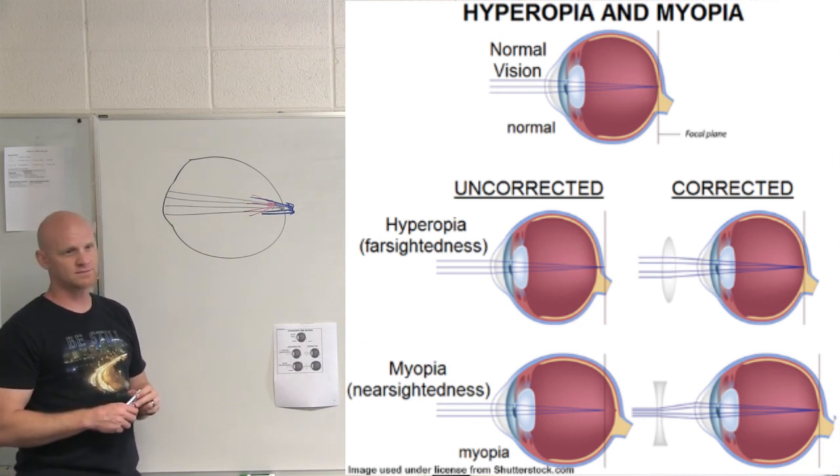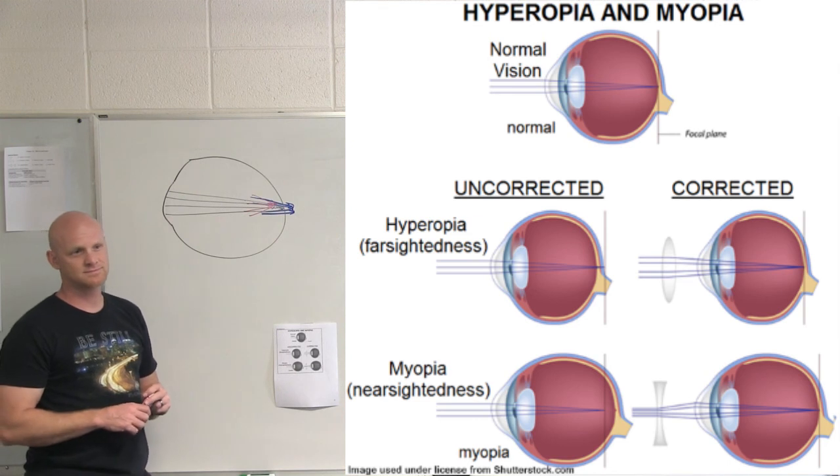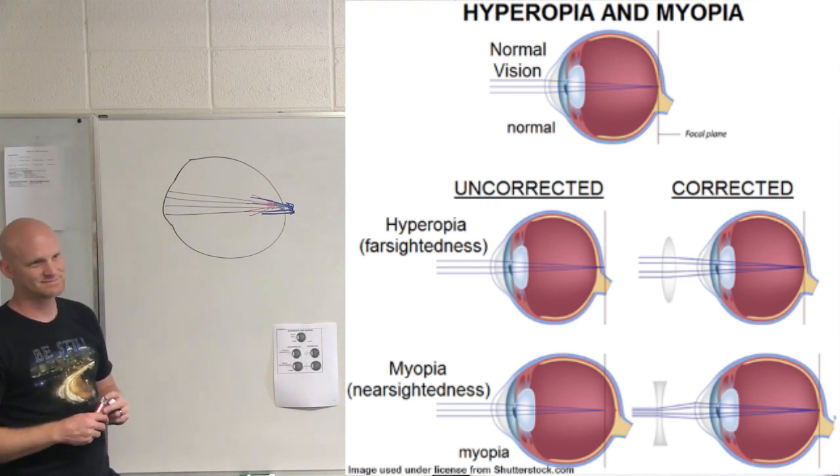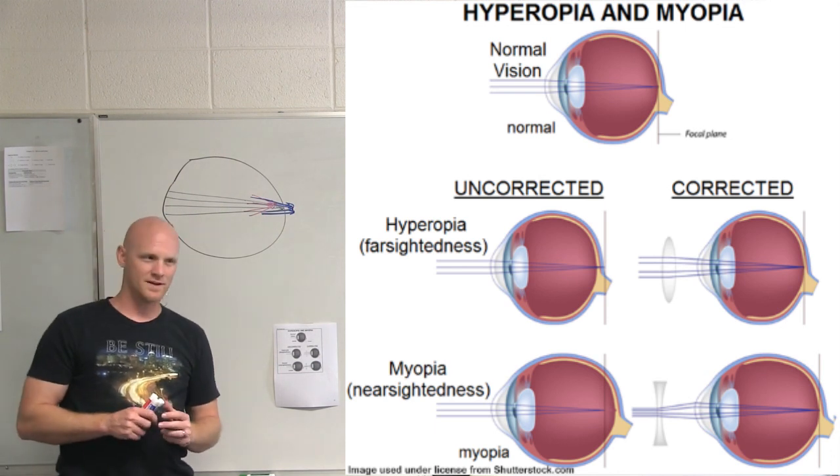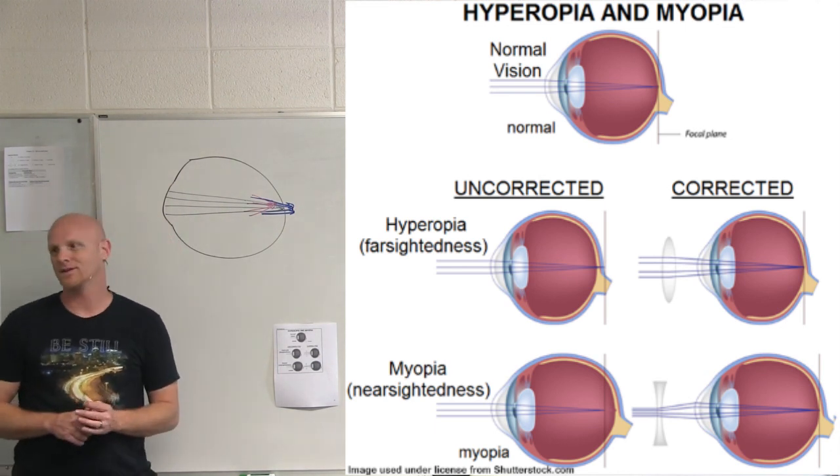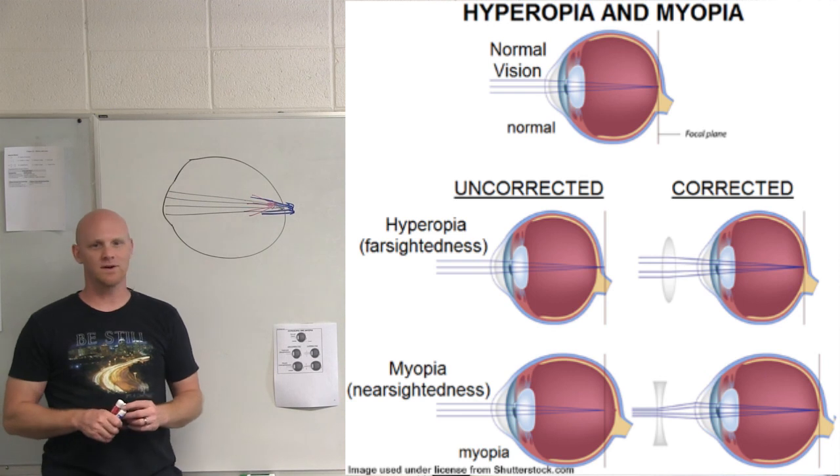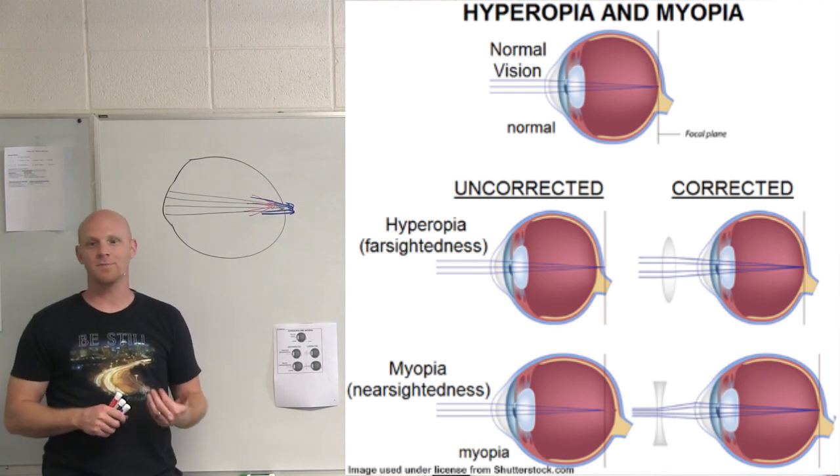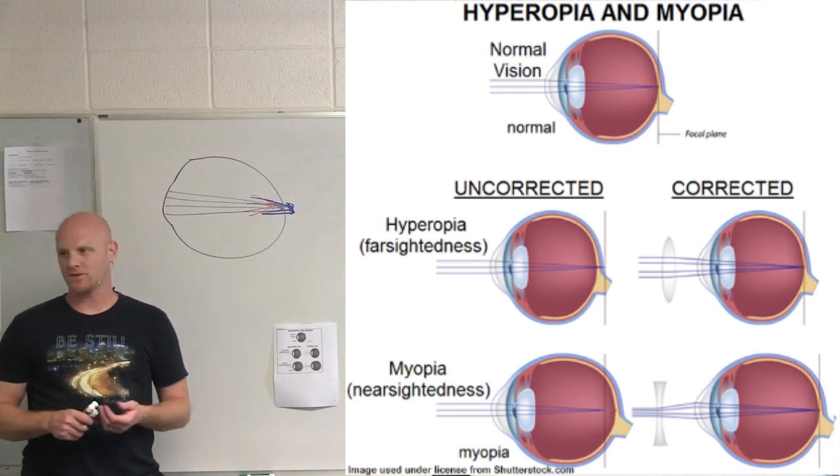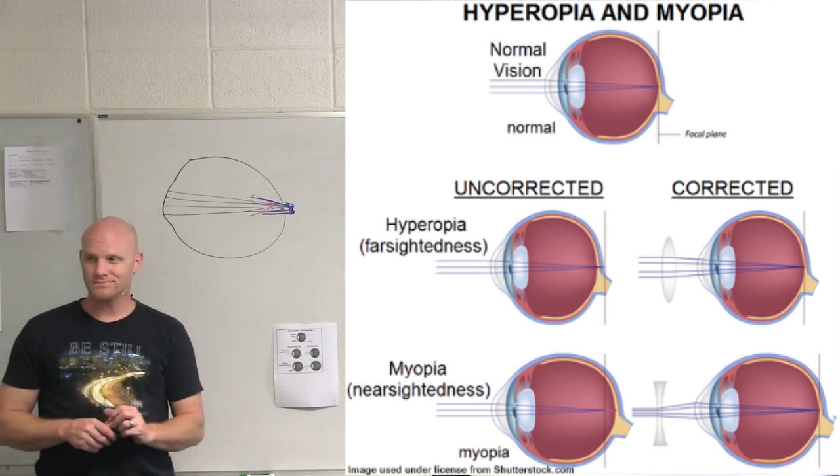It's another name for farsightedness. It's on your handout. Hyperopia for farsightedness and myopia for nearsightedness. Those are two buzz names that are worth committing to memory: hyperopia is farsightedness, myopia is nearsightedness.